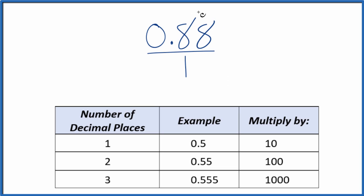What I'd like to do is get this number to be a whole number. I see there are two decimal places. So if there are two decimal places, I can multiply the numerator by 100, and that will give me a whole number.